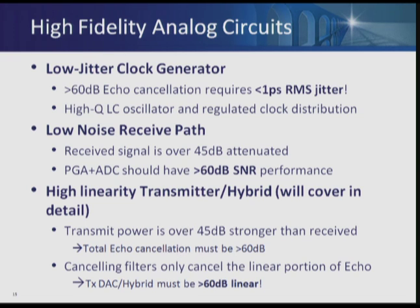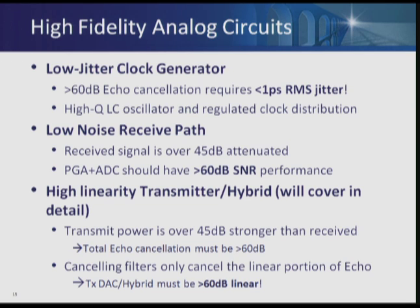On the analog side, there are a number of challenges. We have to provide less than one picosecond of jitter — for example, if you want to cancel echo at a certain point and because of jitter you cancel at a different point, that delta results in error in cancellation. The receive path should have better than 60 dB SNR performance overall. On the transmit side, we are doing a bidirectional link and the transmit signal is 45 dB stronger than the receive side. Since all the cancellation we do is linear, we cannot do anything about distortion, so the distortion has to be 60 dB less.